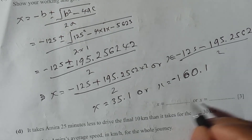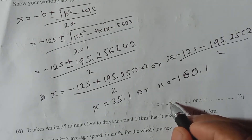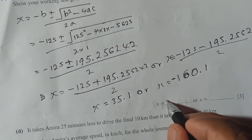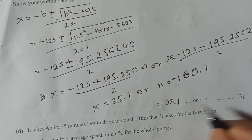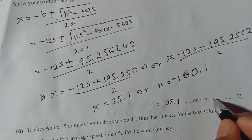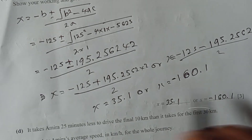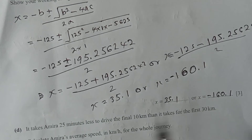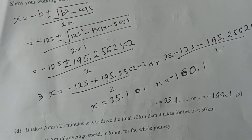They give space to write both answers: write 35.1 and minus 160.1. But keep in mind that x represents time, so the valid answer is x equals 35.1.